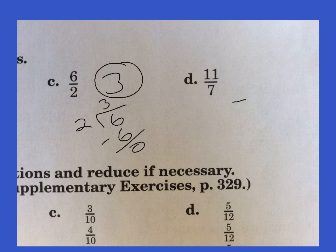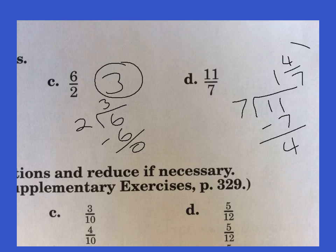D — seven goes into eleven one time. When I subtract, I get four. So the four goes on top and the seven goes on the bottom. Our answer is one and four sevenths.